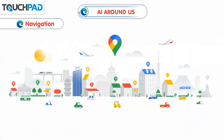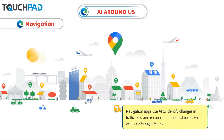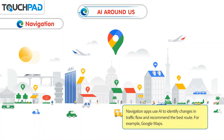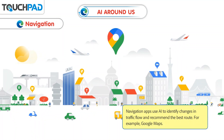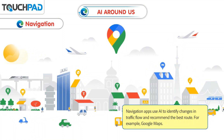Navigation. Navigation apps use AI to identify changes in traffic flow and recommend the best route. For example, Google Maps.